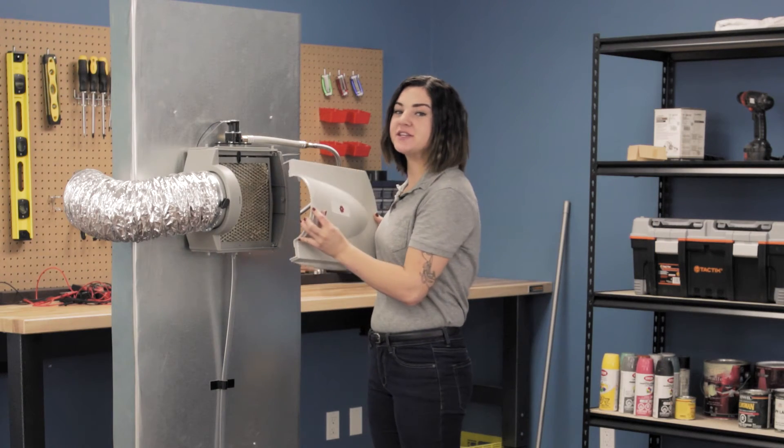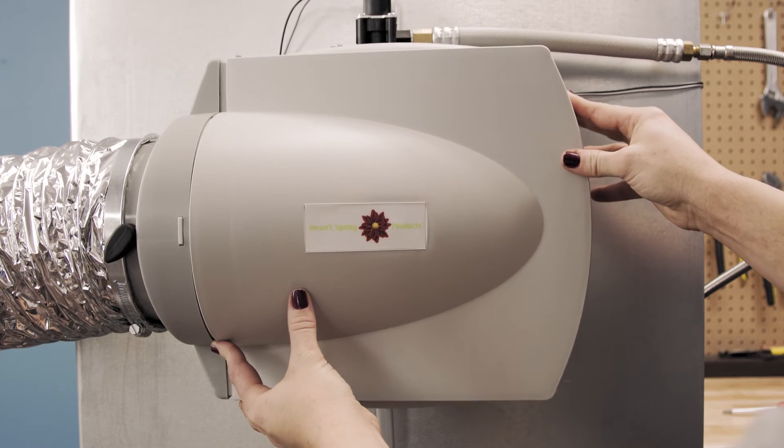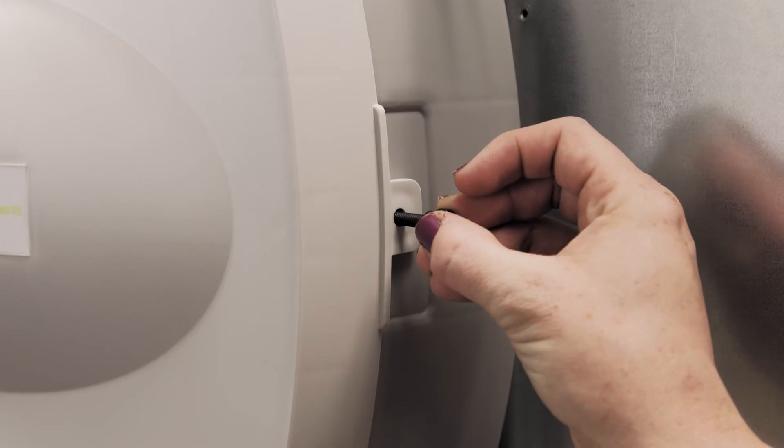First, insert the tab then angle the cover back into place. Now tighten the thumb screw.